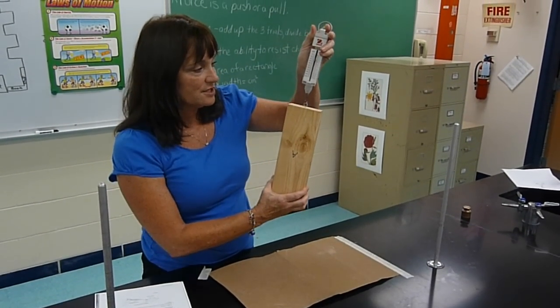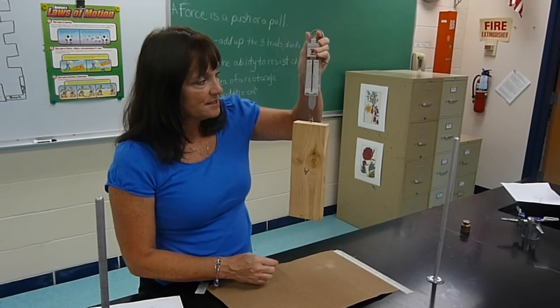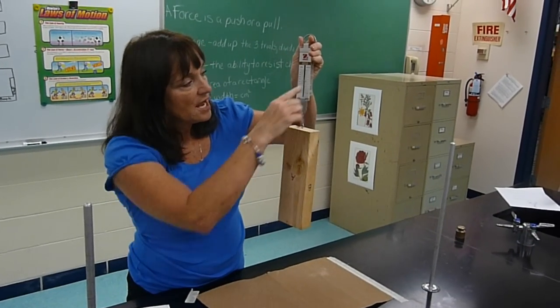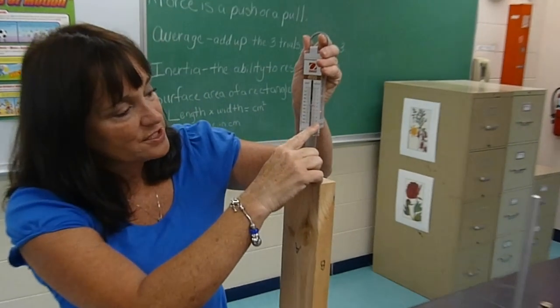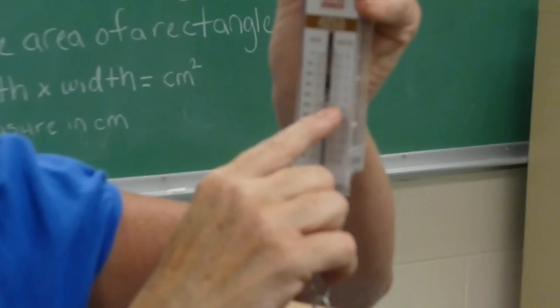The first thing we're going to do is take your piece of wood by the eye hook and hold it nice and still. On the spring scale, there are four lines altogether between scoring intervals, so each line is worth 0.2 of a newton. This particular piece of wood reads 0.2 of a newton.